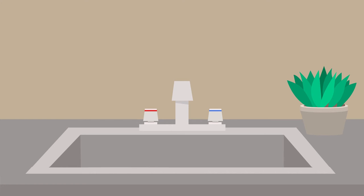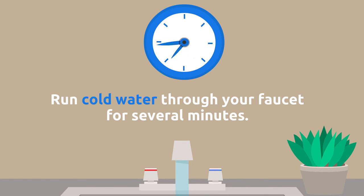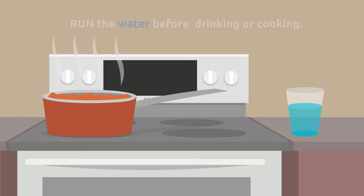If you can't replace your lead service line, there are other things you can do to reduce the likelihood of lead entering your drinking water. One thing you can do is run cold water through your faucet for several minutes before using it. Run the water before drinking or cooking to get rid of the water that has been sitting in the service line.